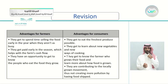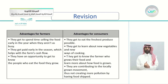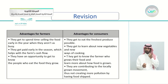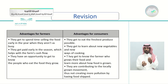Advantages for consumers: first, they get to eat the freshest produce possible because they're getting it directly from the farm. Second, they get to learn about new vegetables and new ways of cooking. Third, they get to know the farmer who grows their food and learn more about how food is grown. Fourth, they are contributing to the locally grown movement, thus not creating more pollution by having food shipped.